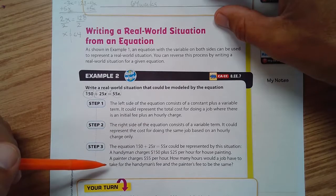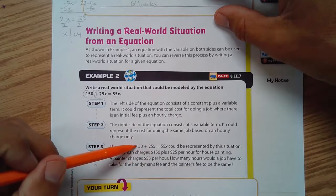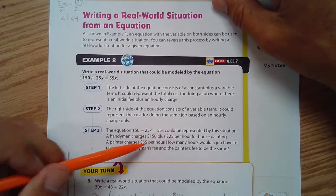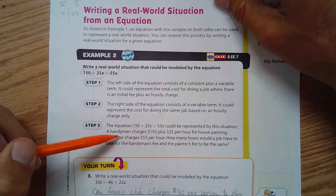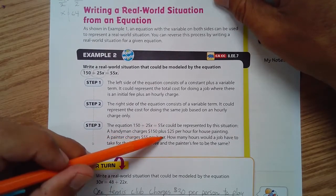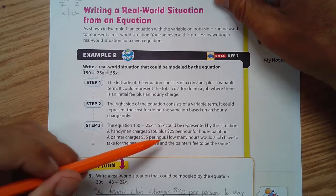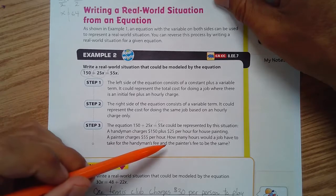The equation 150 plus 25x equals 55x would be represented by this situation: a handyman charges $150 plus $25 per hour for house painting. Another painter charges $55 per hour. How many hours would a job have to take for the handyman's fee and the painter's fee to be the same?